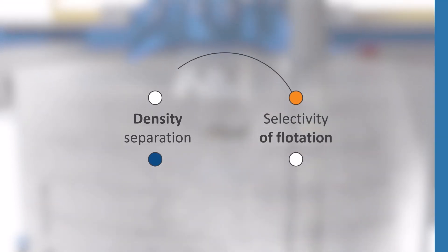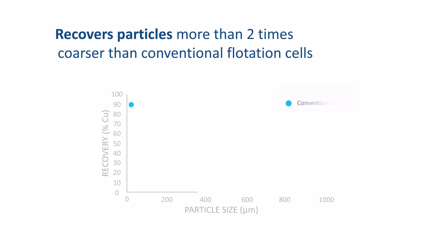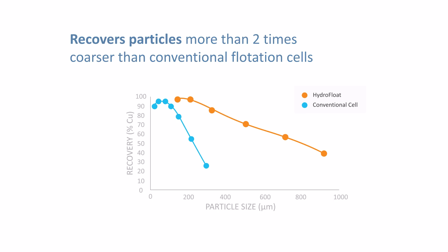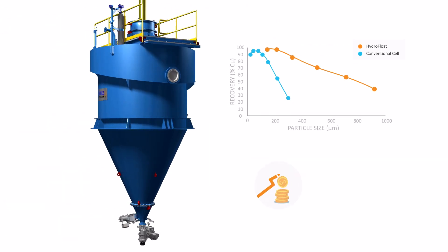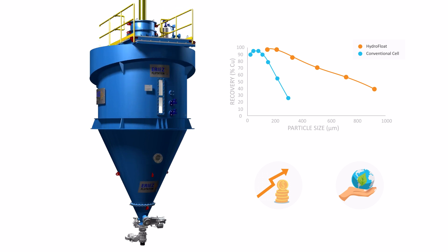The Hydrofloat selectively recovers particles more than two times coarser than conventional flotation cells, and this allows for a shift in the economic optimum grind size, which increases profitability and improves environmental sustainability of mining projects.